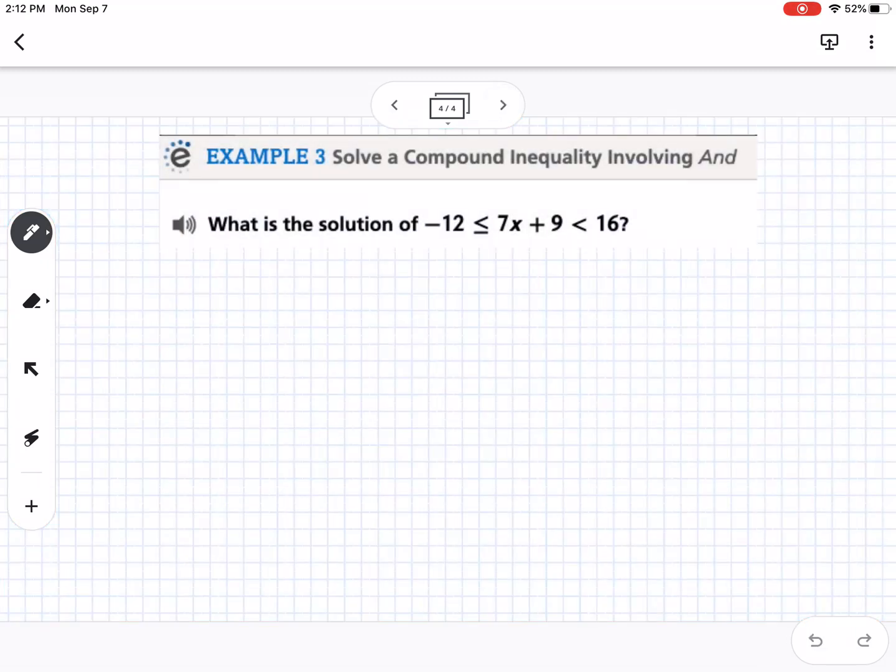And here's our last example. We're going to solve, this is an and inequality. You can tell because it's one big compound inequality. So just to keep myself organized, I'm going to draw a line where both of the inequality symbols are. So this is like one giant equation and it's kind of weird, but you're going to do the same thing to all three parts.